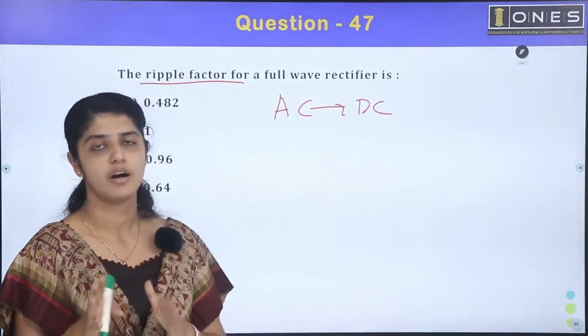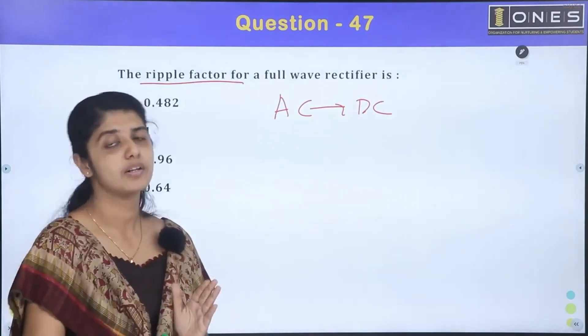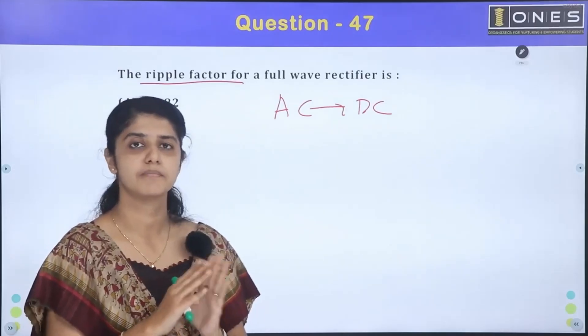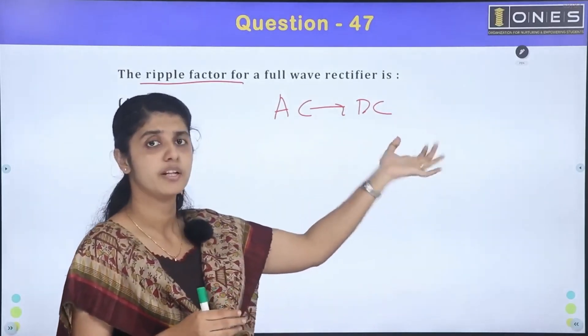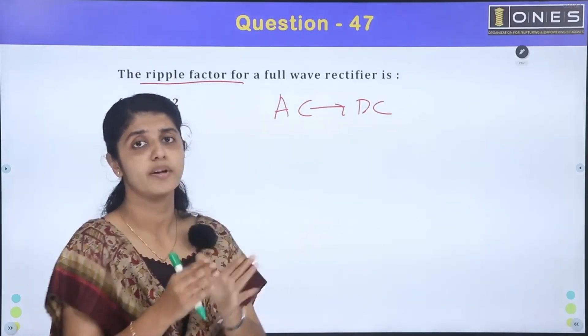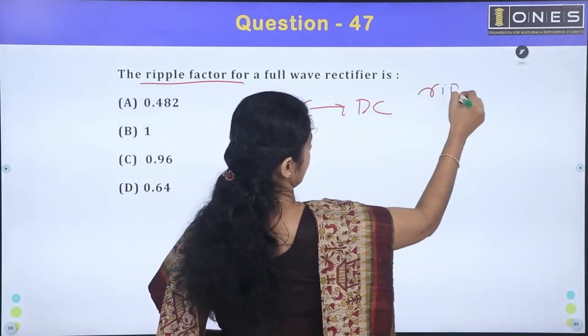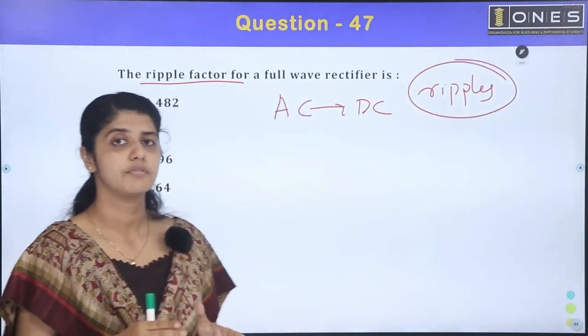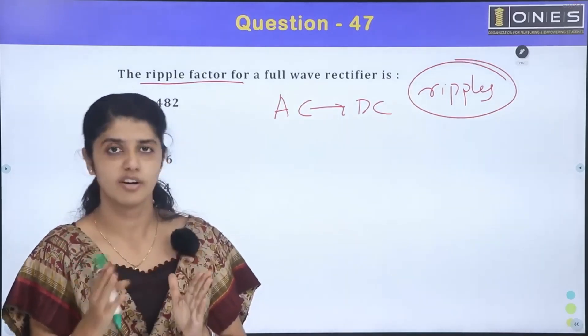Full wave rectifier is a half wave rectifier. Then, the output of the rectifier is DC. We call it DC. We call it ripples. What is the ripples? What is the ripples? The ripples is a rectifier.